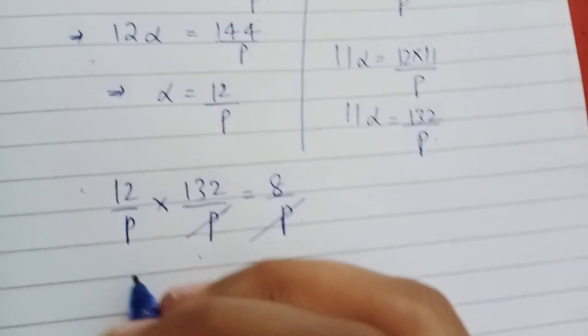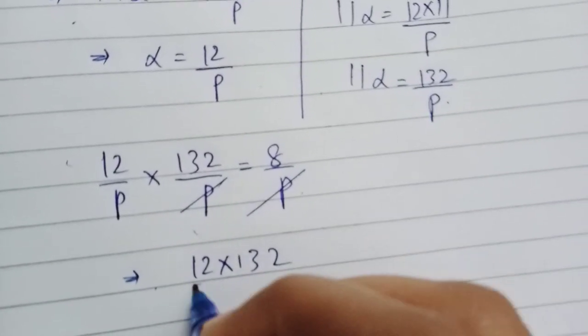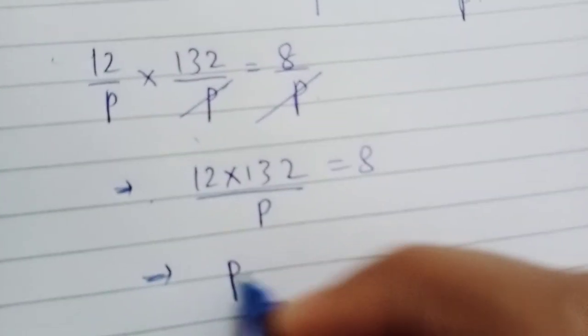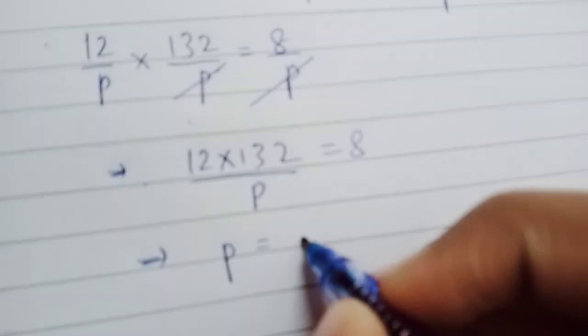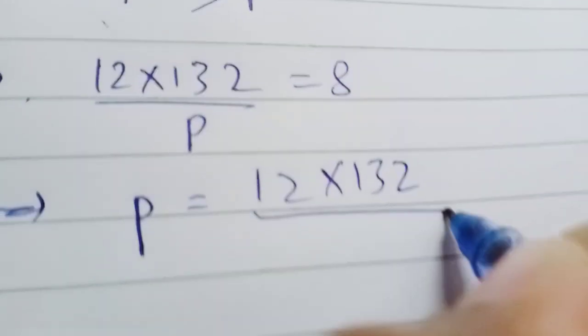The p's cancel, giving (12 times 132)/p = 8. So p = (12 times 132)/8.